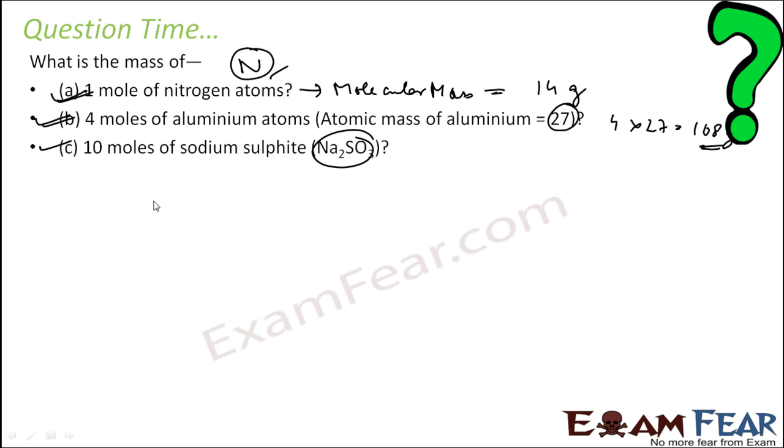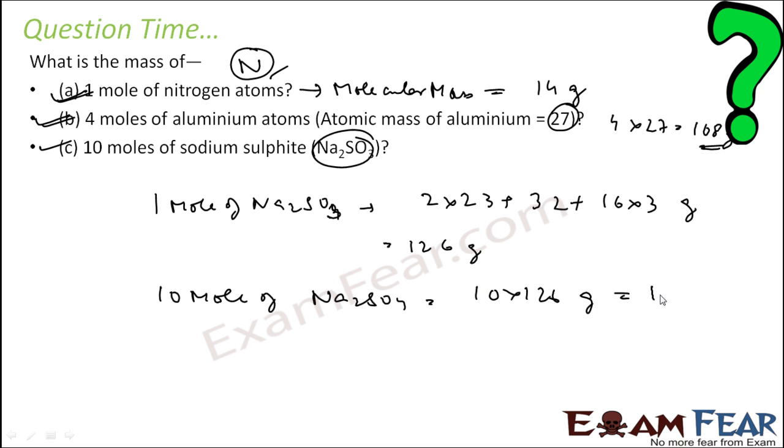Third is 10 mole of sodium sulfite. One mole of sodium sulfite will be how much? Two sodiums, that is 2 into 23. One sulfur is 32. Three oxygen, 16 into 3. That is 126 grams. So one mole of Na2SO3 is 126 grams. So 10 moles of Na2SO3 will be 10 into 126 grams, that is 1260 grams.